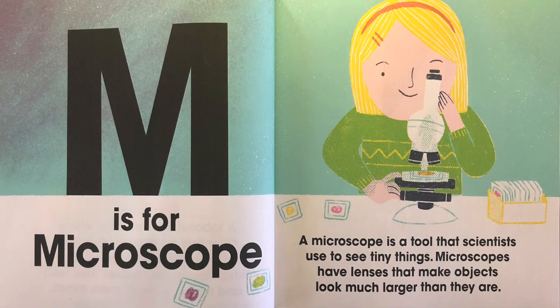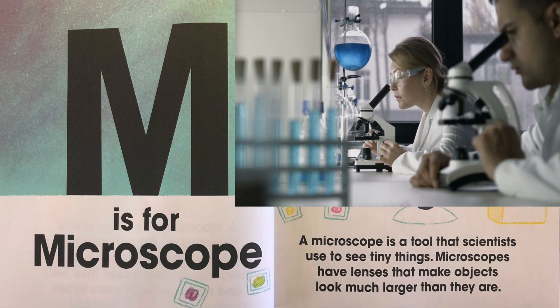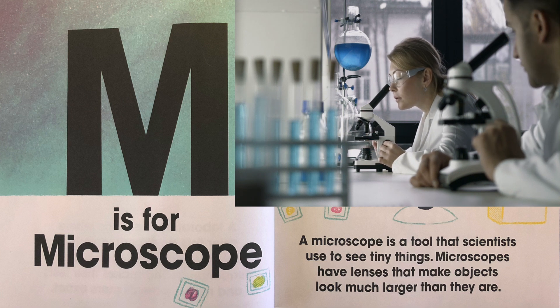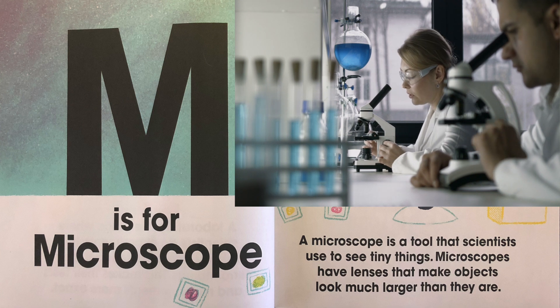M is for microscope. A microscope is a tool that scientists use to see tiny things. Microscopes have lenses that make objects look much larger than they are.